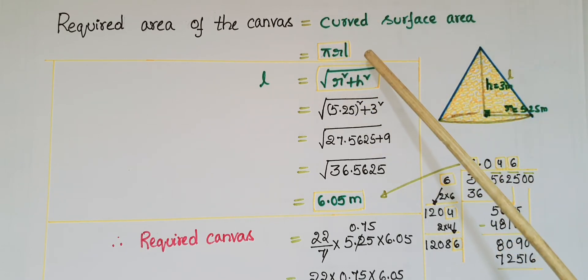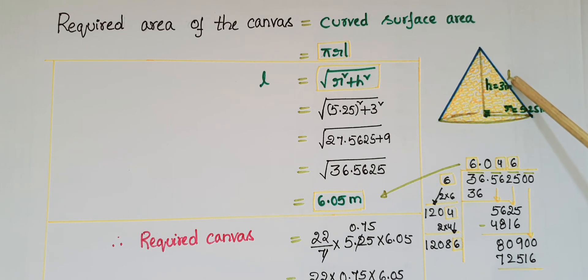Required area of canvas = curved surface area = πrl. We need to find slant height l. l = √(r² + h²) = √(5.25² + 3²) = √(27.5625 + 9) = √36.5625 = 6.05 meters.